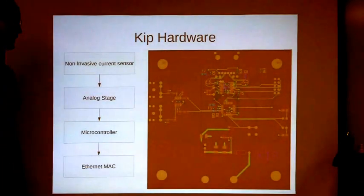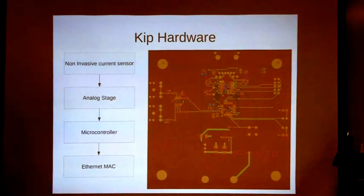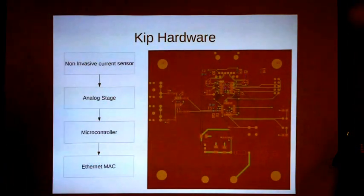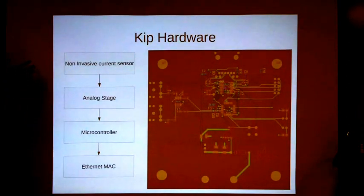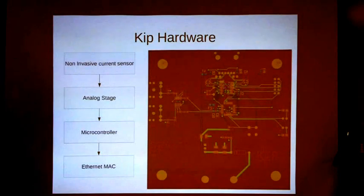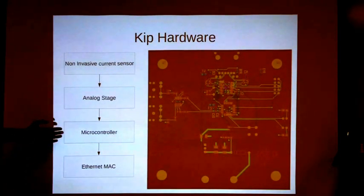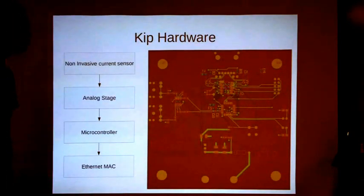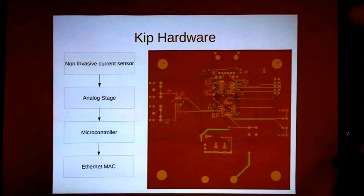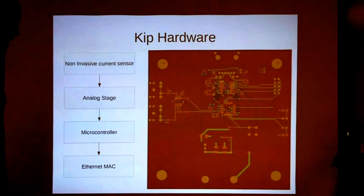So I designed the board, so we'll talk about the hardware a little bit. Here's the board in all its glory. We use these non-invasive current sensors. It goes into the analog stage for buffering. Once again, we have the microcontroller, which is the 18Mega320 key, which then passes the data over the SPI protocol to the Ethernet MAC, which is ENC28G60.